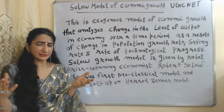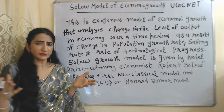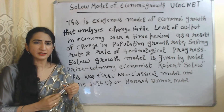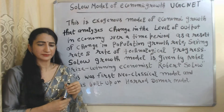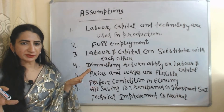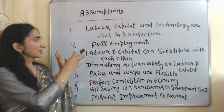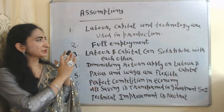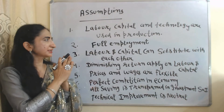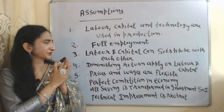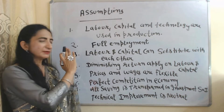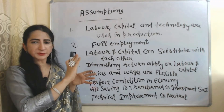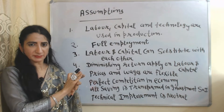This model is given by Nobel Prize-winning economist Robert Solow, and this is the first neoclassical model, which was built upon the Harrod-Domar model. Now we will see the assumptions of this model. According to this model, we use labor, capital, and technology in production, and there is full employment in the economy.